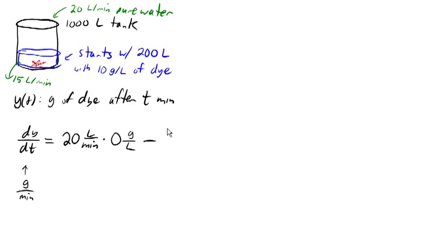Leaving, we have 15 liters per minute of liquid. And now we need to again multiply by the concentration of dye, grams per liter. Now it's really tempting here to say it's 10, but it doesn't stay at 10, it starts at 10.